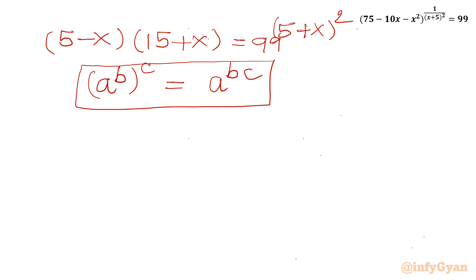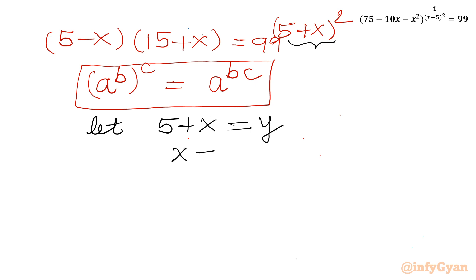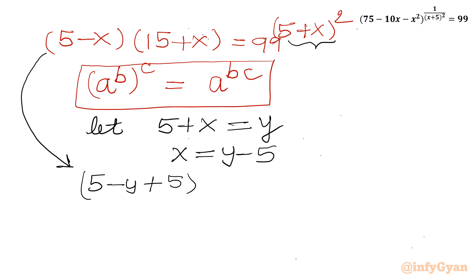Now I will consider a substitution. Let 5 plus x equal to y, so x equals y minus 5. Applying this: (5 minus x) becomes (10 minus y), and (15 plus x) becomes (15 plus y minus 5), which is (10 plus y). The right-hand side remains 99 and the power becomes y².